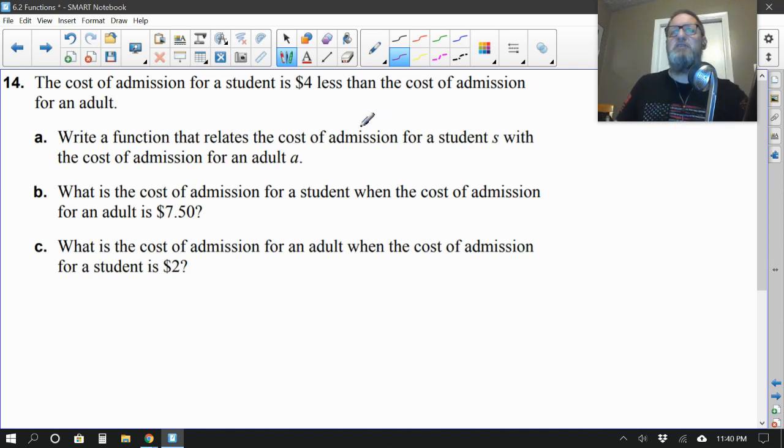And now we have number 14. The cost of admission for a student is 4 less than the cost of an adult. I've seen that before, where the adult has to pay more than the student. Okay. Write a function that relates the cost of admission for a student with the cost of admission for an adult. Actually, there's two equations you could create here. One would be based on the student. So the student actually pays less. So the student price would be the same thing as the adult price take away 4. You see why? Because the student is 4 less than the adult. That's one way of writing the equation. There is another, however. Another option would be the adult. The adult price is the same thing as the student price. Do you know what I'm going to write? The adult price is the same as the student price plus 4, right?